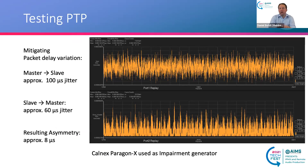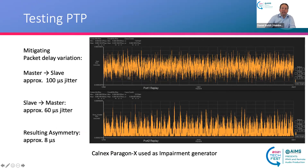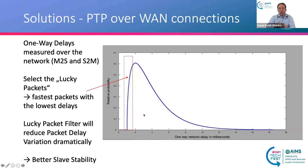How do we test and optimize PTP slave algorithms to deal with these challenges? You can use a so-called impairment generator like the Paragon X device from Calnex, which can generate different jitter profiles — for example, 100 microseconds of jitter average from master to slave and a different jitter from slave to master for an asymmetrical situation. This scenario would result in an asymmetry of approximately 8 microseconds that the slave has to deal with.